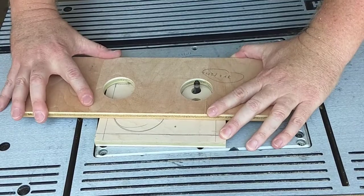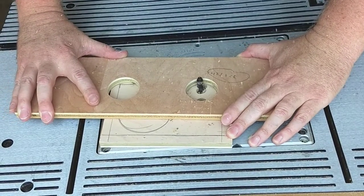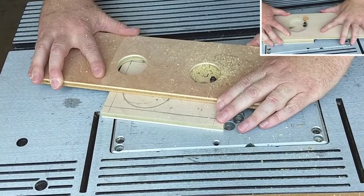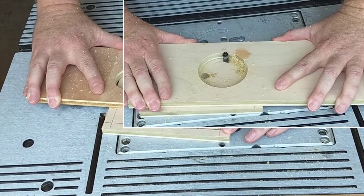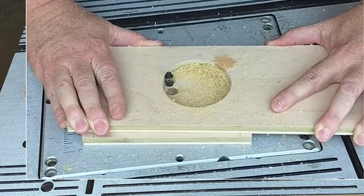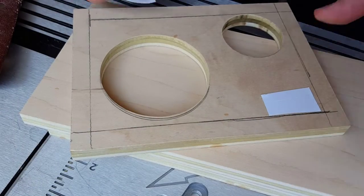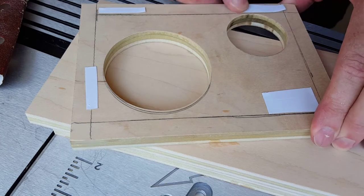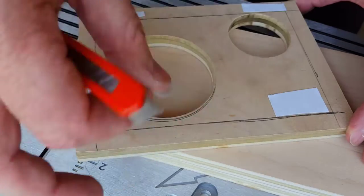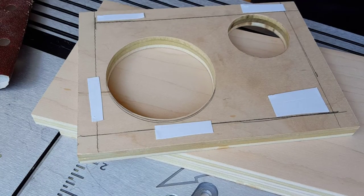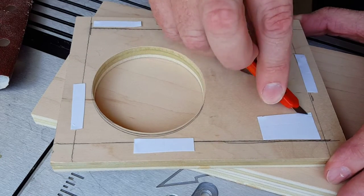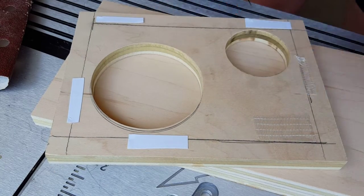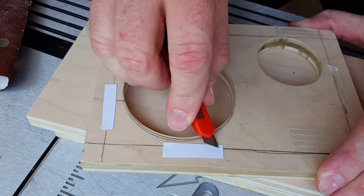Now it's just a matter of popping over to the router and routing out the hole for the tweeter and the mid-range on my baffle template. Now my baffle template is ready to go. All I have to do is put some double-sided tape on it—this is double-sided carpet tape that you can pick up at any big box store, on Amazon, or any place like that. I'll give you a link to this product in the description. You just stick it on and then take a knife and peel off the back, and then flip it over and stick it to your piece. Then you can route out your holes with a flush trim bit on the router.